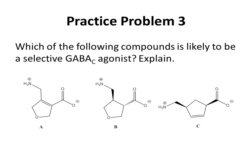Practice Problem 3: Which of the following compounds is likely to be a selective GABA-C agonist? Explain. Remember, the GABA-C agonist should look like a folded conformation of GABA. At this point, you want to pause the video in order to work on the practice problem.